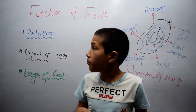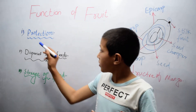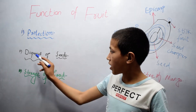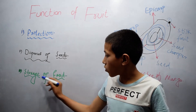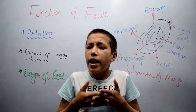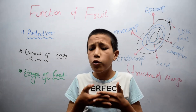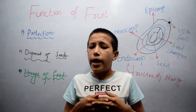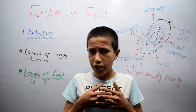There are three functions of fruit. The first one is protection — it protects the seed against injury and other unfavorable climatic conditions. The second one is dispersal of seeds.